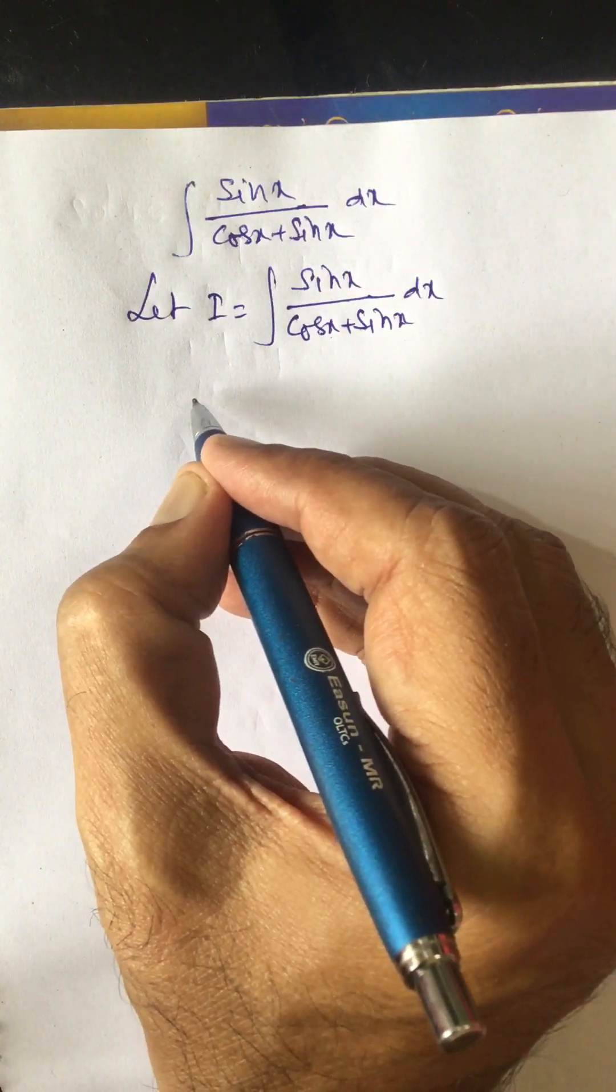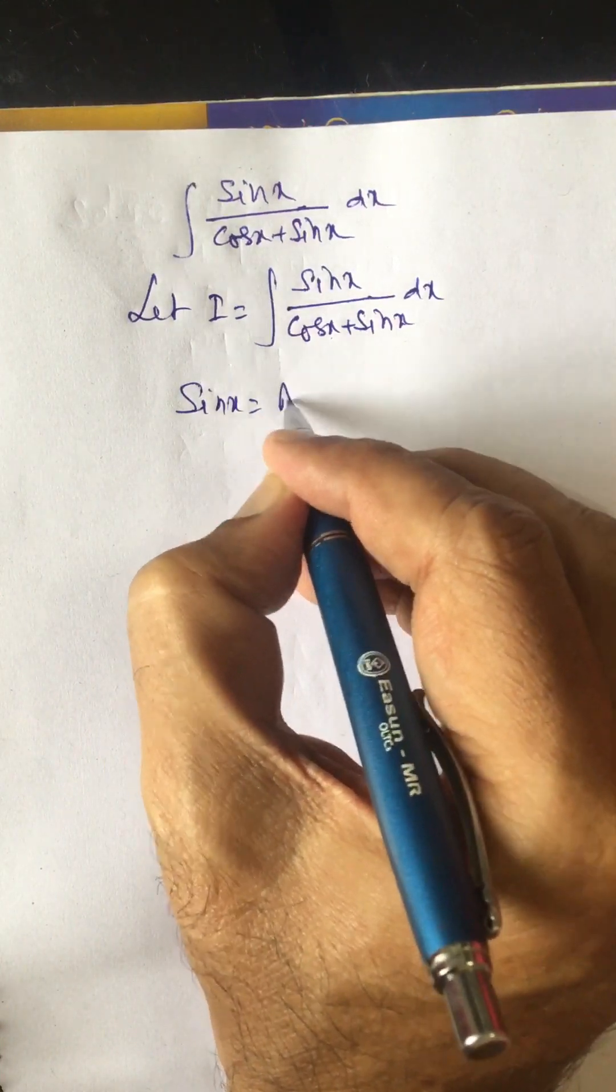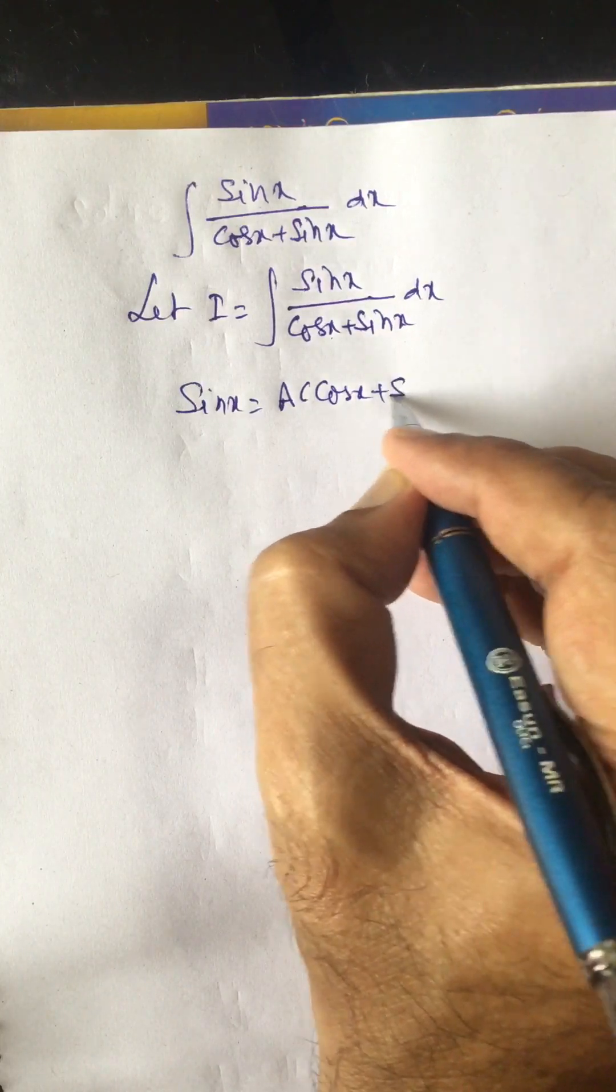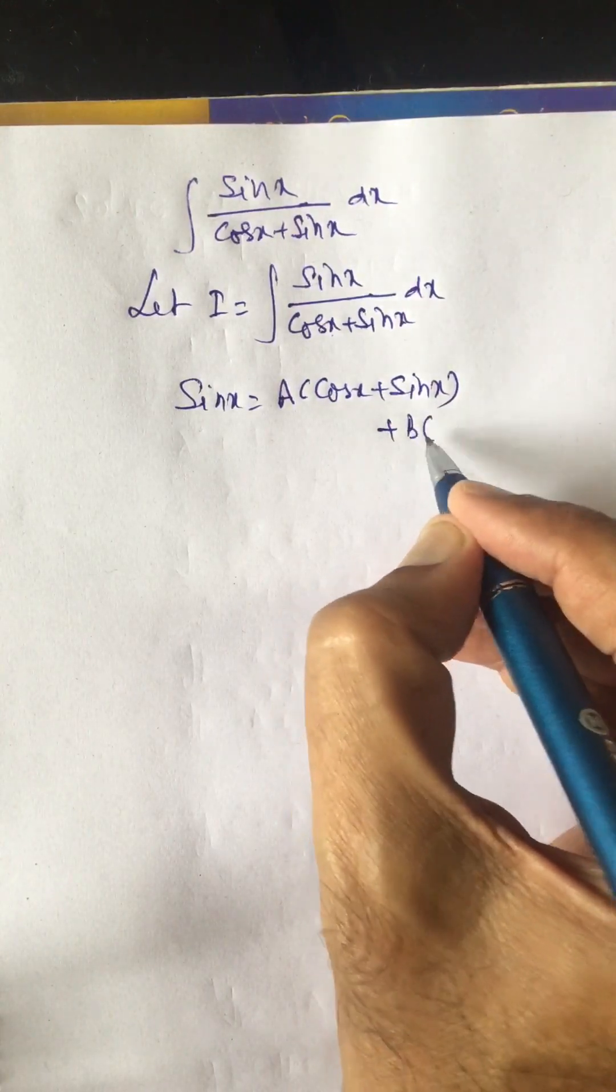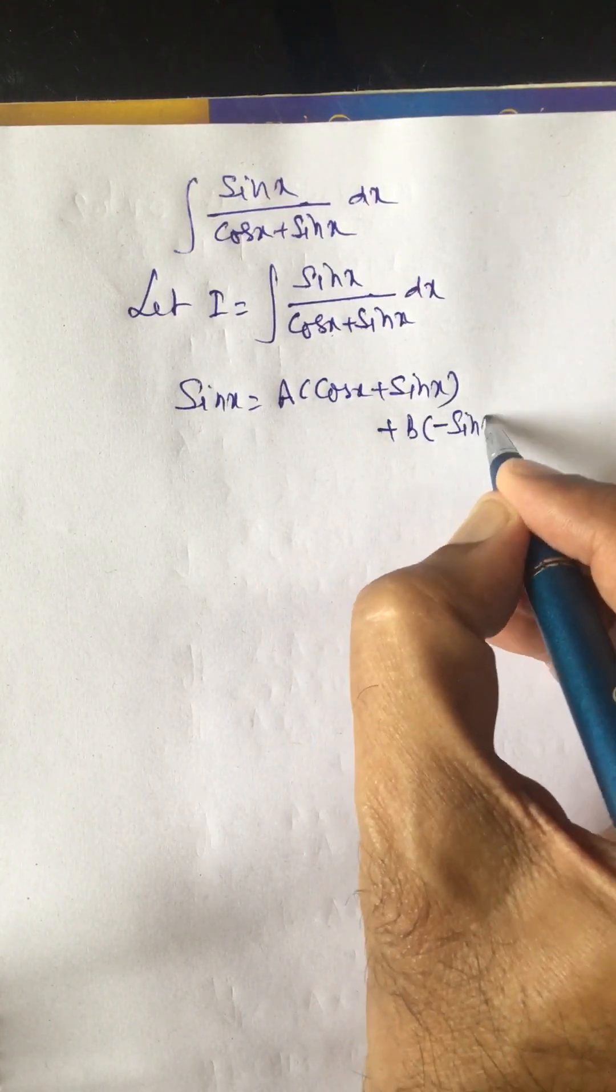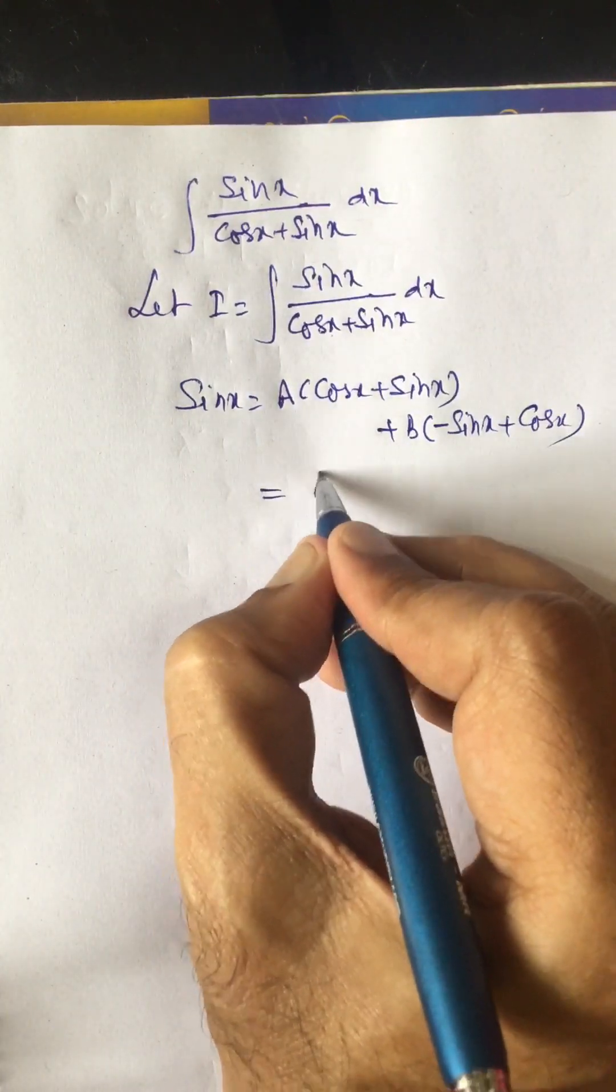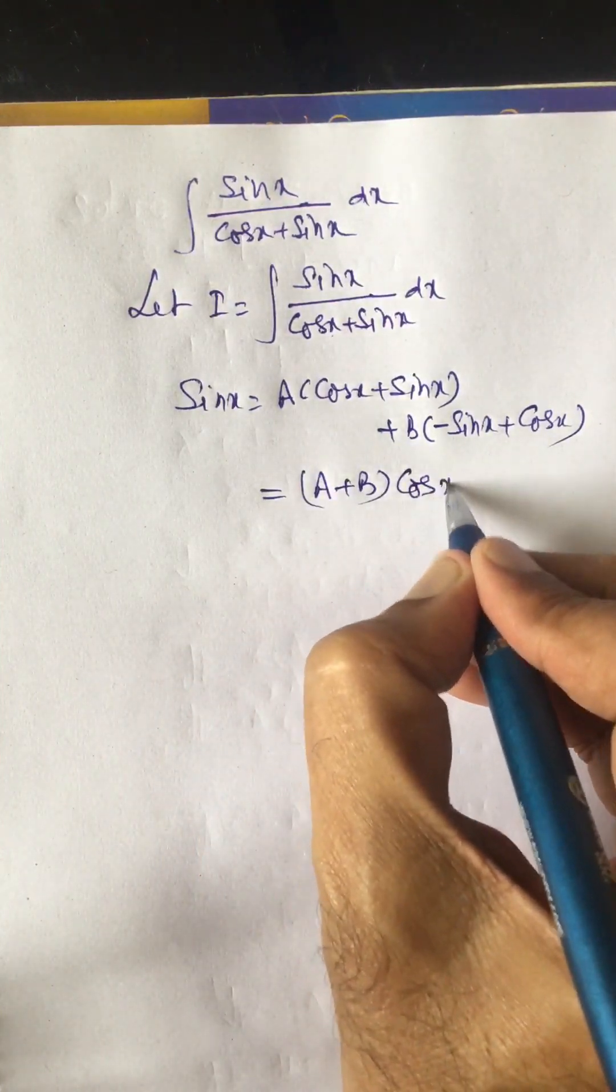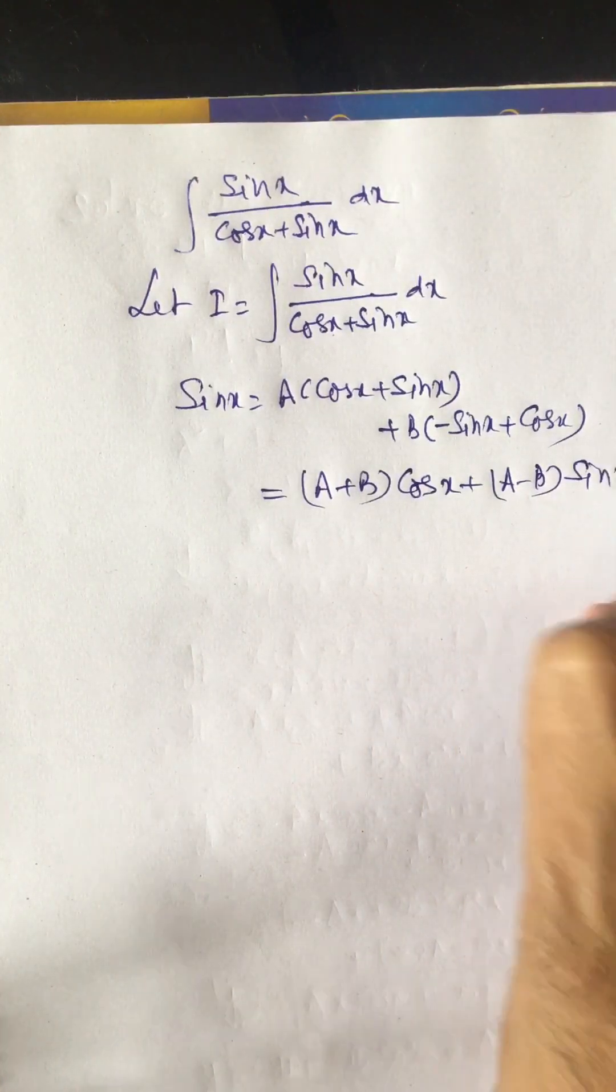We can write sin x equal to a times cos x plus sin x, plus b times its differential which is minus sin x plus cos x. This we can write as a plus b times cos x, plus a minus b times sin x.